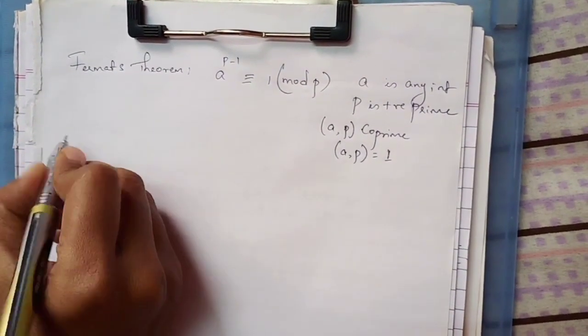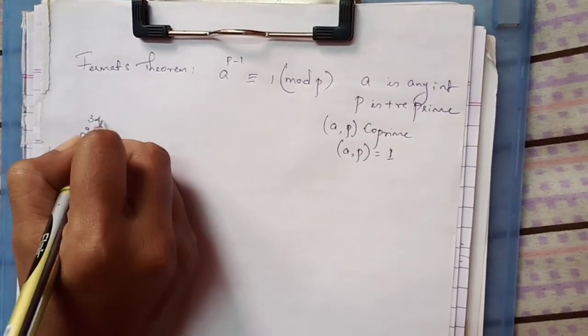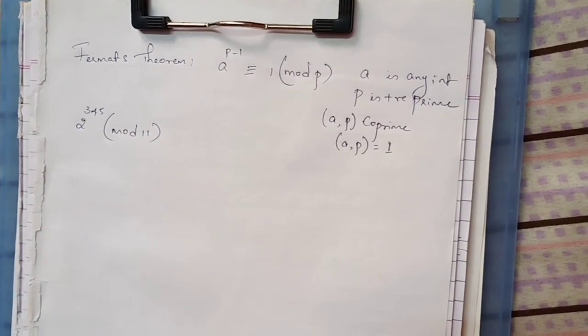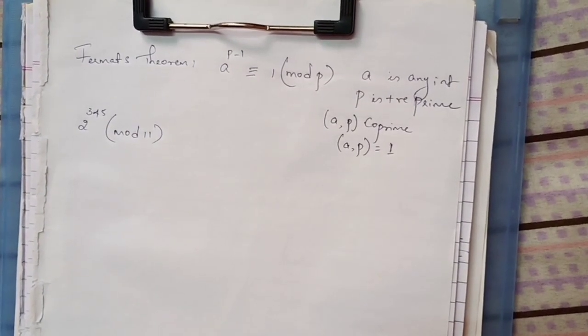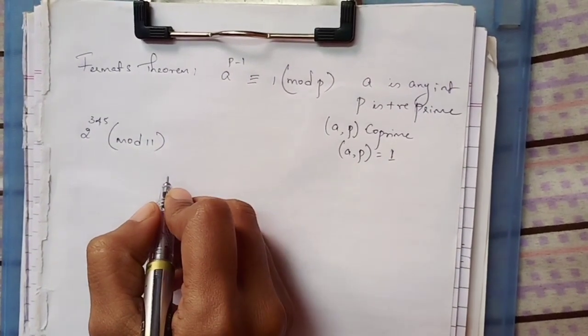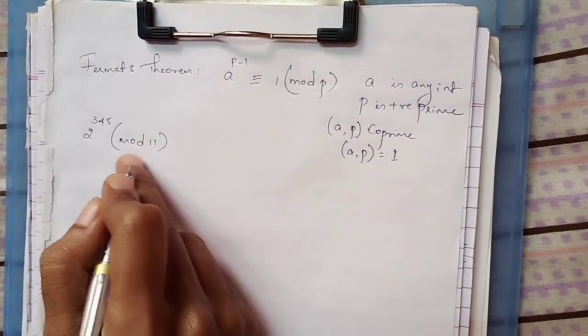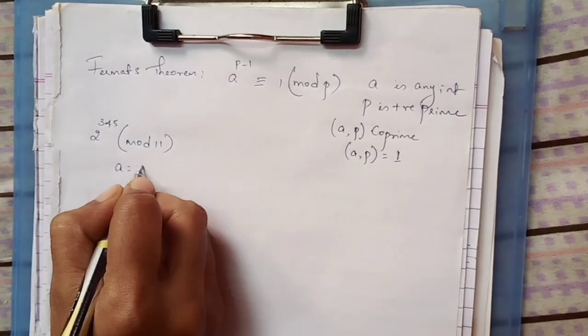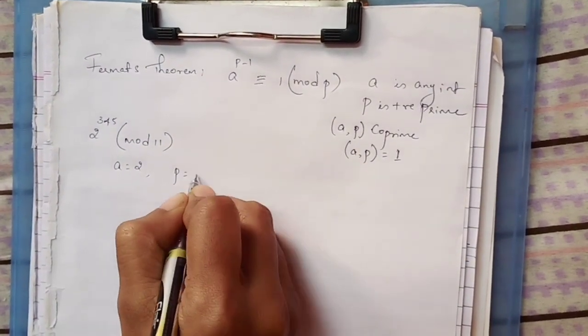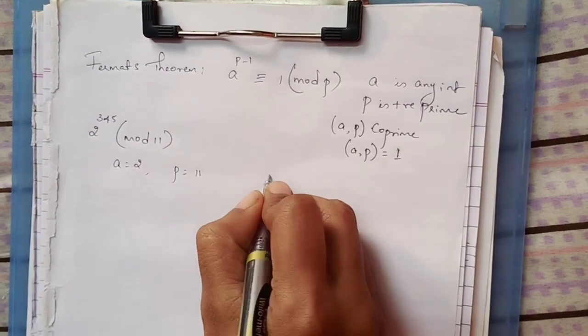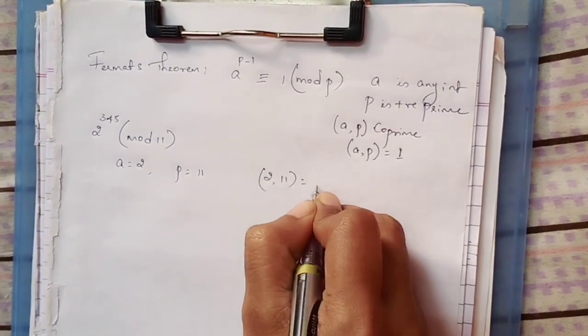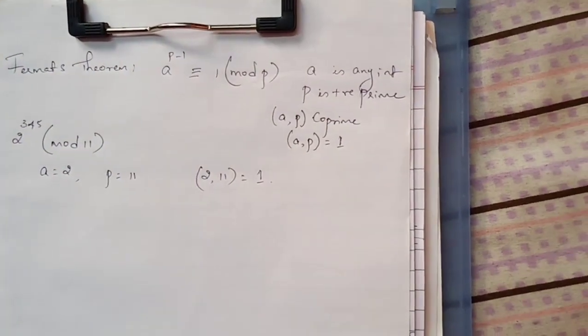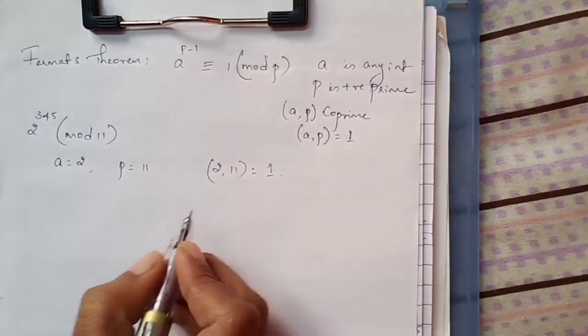Let's take up the question: 2 to the power 345 divided by 11. When 2 power 345 is divided by 11, what is the remainder? We have to find this. Let us compare this with the question where a is 2 and p is 11. Since p is a prime number, 2 and 11 have the common factor only 1, so they are coprimes. We can apply Fermat's theorem.